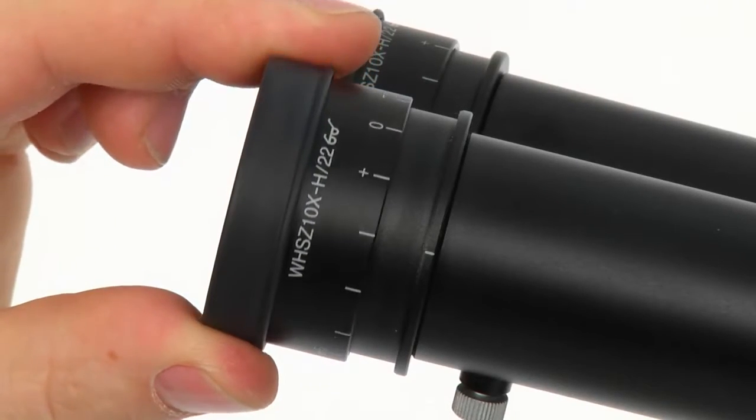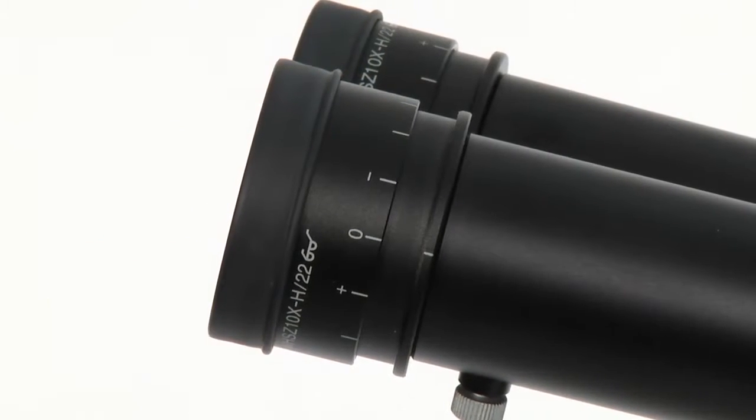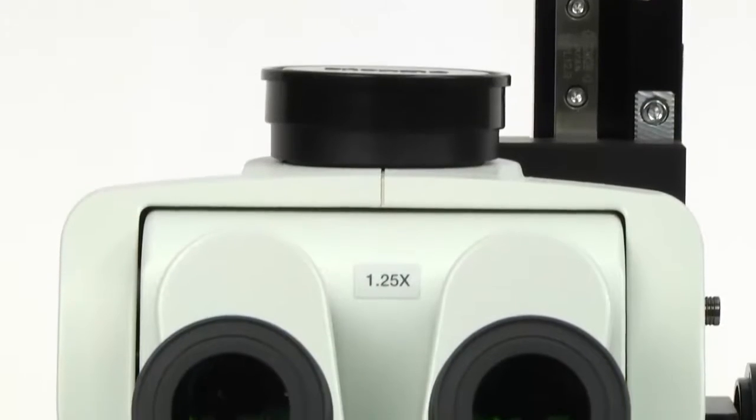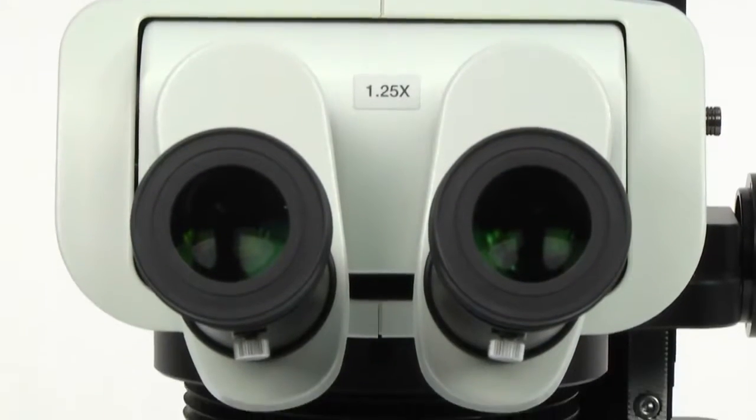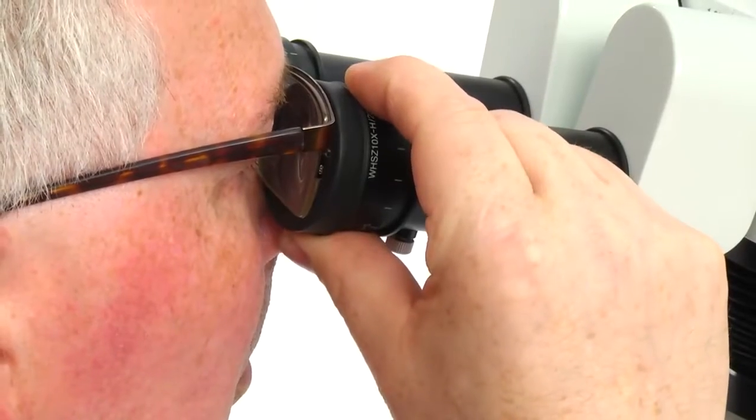To make the adjustment, turn the diopter rings of the left and right eyepieces to position zero. For operators with perfect 20-20 vision, this is the correct setting. All others require the following adjustments.